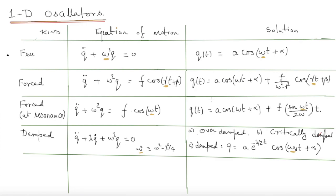Then we looked at forced oscillators at resonance. If omega equals gamma, the particular solution appears to be blowing up, so we need to find the correct solution. We wrote down the equation again, this time choosing beta to be 0. We found the solution: the homogeneous part is the same as before, but the forced part is growing with time linearly. Clearly, after a while q will not be small anymore and our physical assumption in writing down this equation will not hold. The equation is mathematically fine, but our physical assumption of small solutions will break down.